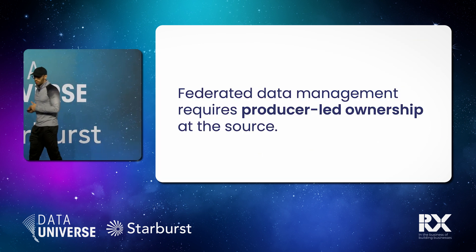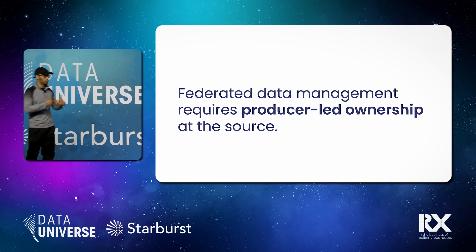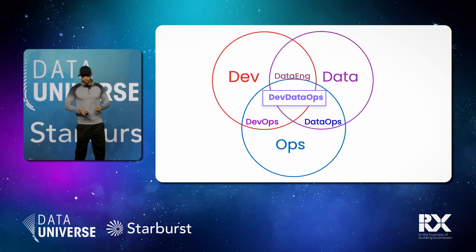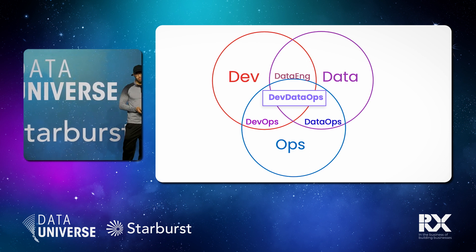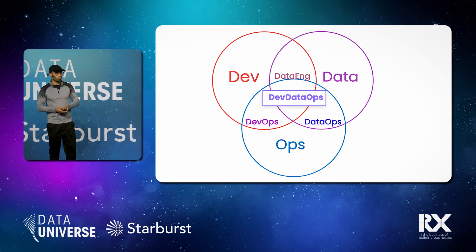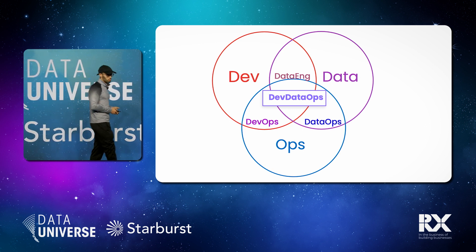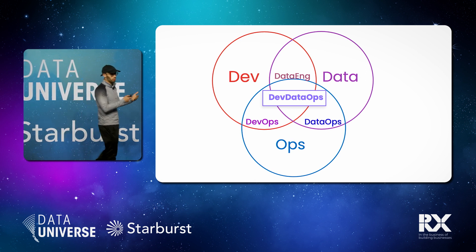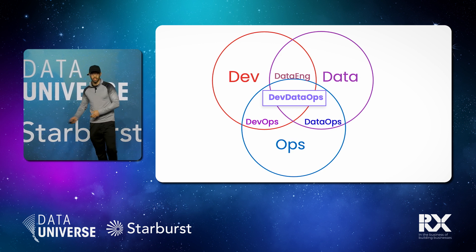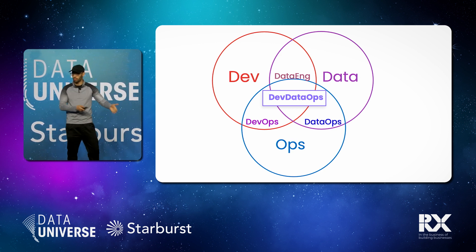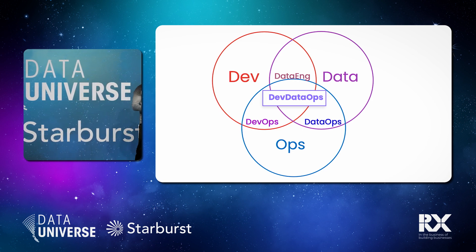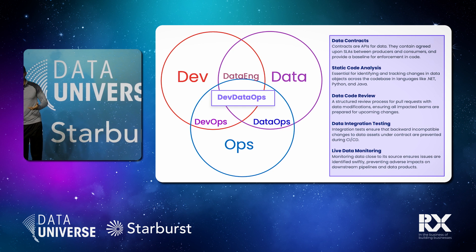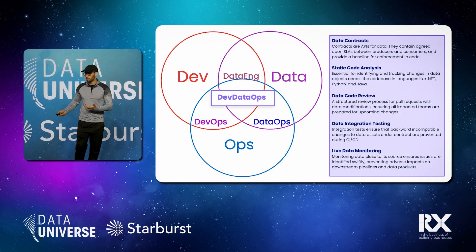Federated data management is all about bringing the producer into the data management lifecycle and not excluding them from the process while only focusing on the downstream data team. I call this DevDataOps. This has some precedent in the world — there's a term called DevSecOps, which came about around five to seven years ago from security engineering teams who were tired of dealing with security incidents after the fact. They said we can actually prevent these things from happening in the first place, but we need to integrate security best practices into our engineering pipelines and workloads. DevDataOps follows a very similar pattern: let's take everything we know about data management, everything we're doing downstream, and start to move it upstream.